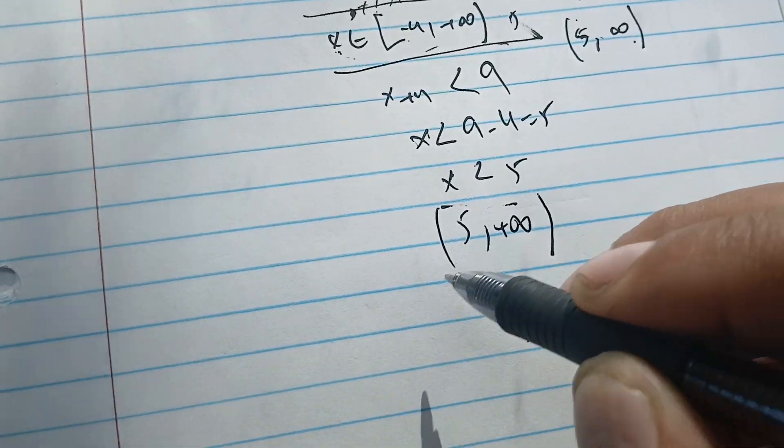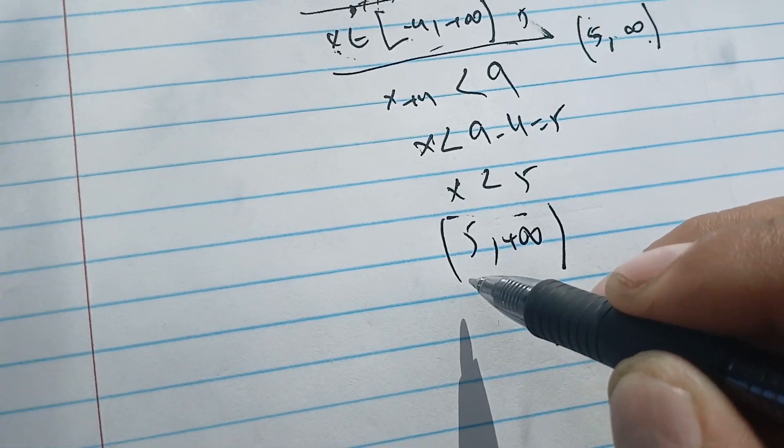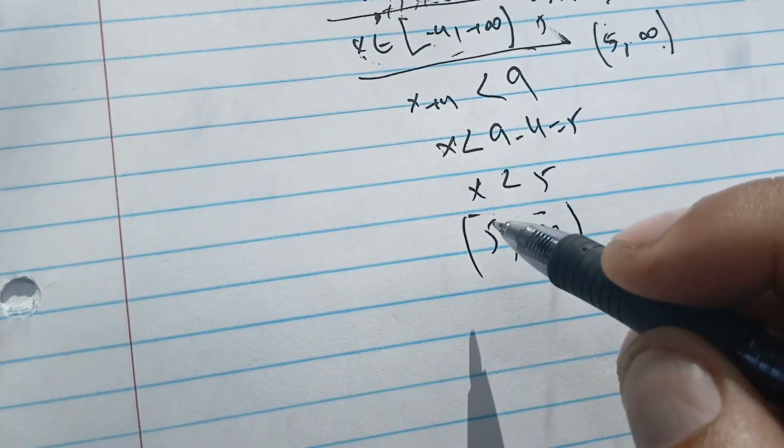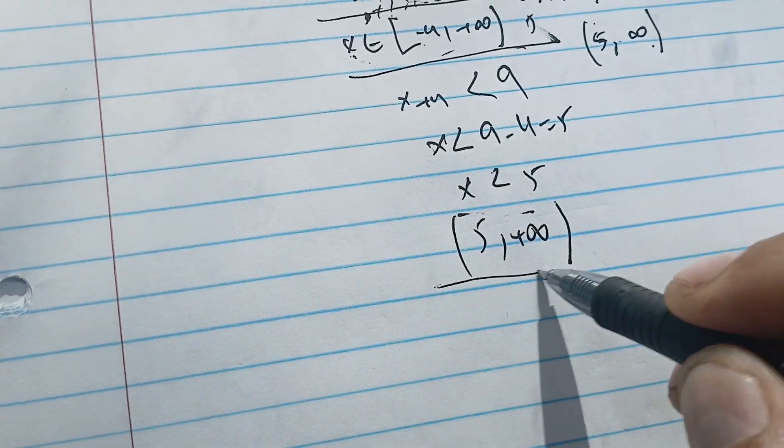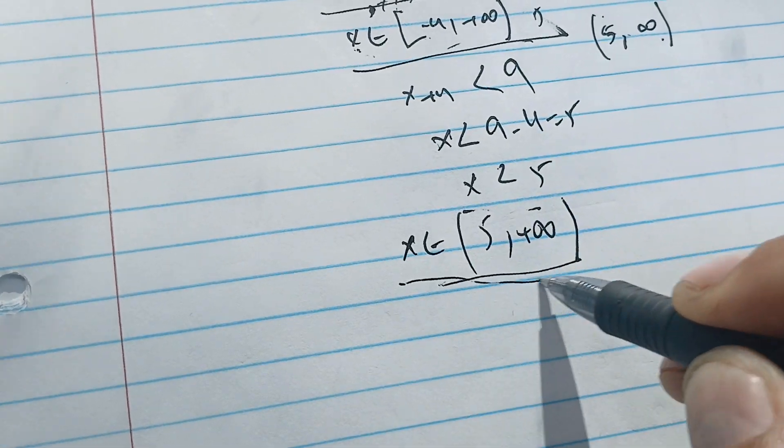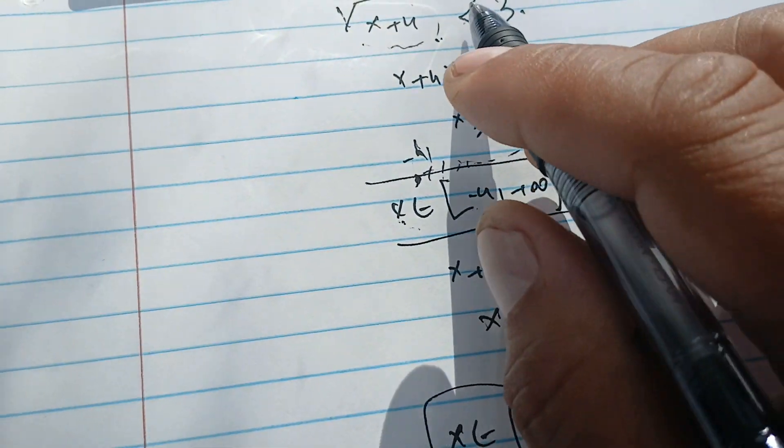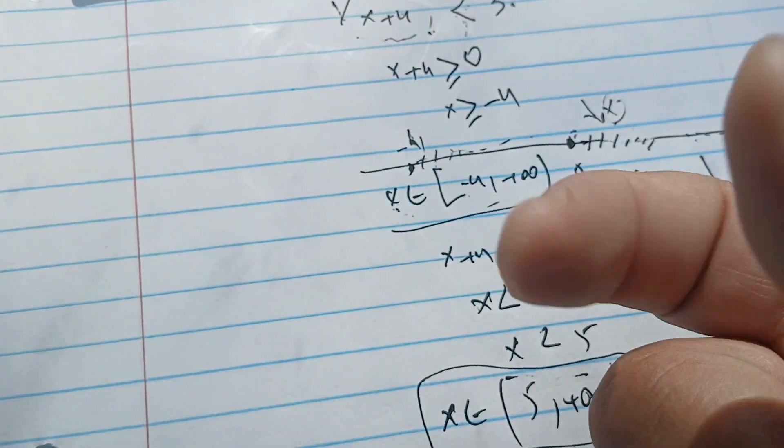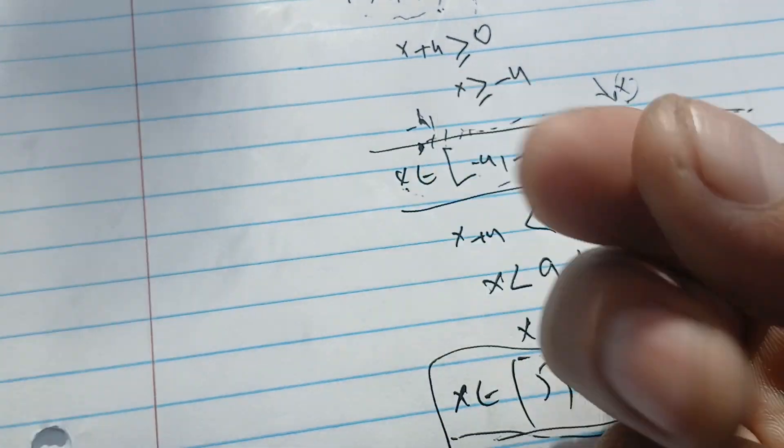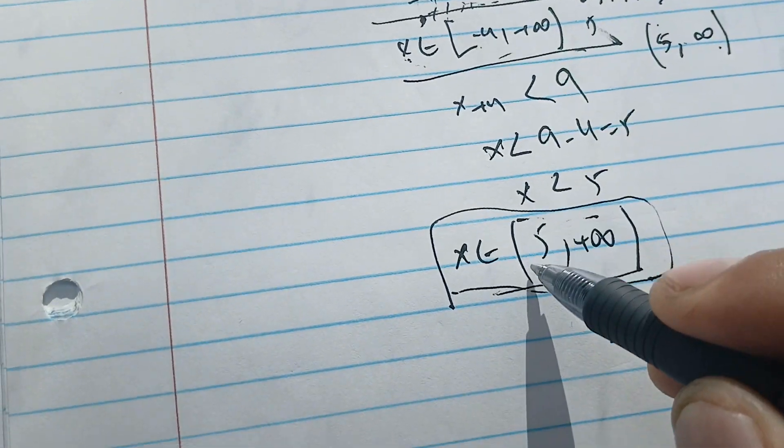So the solution for this inequality is that this is our interval for the solution. So x has to be in this interval to keep this one true. Now we are not solving for a particular value of x; we are solving for an interval, and that interval is this one.